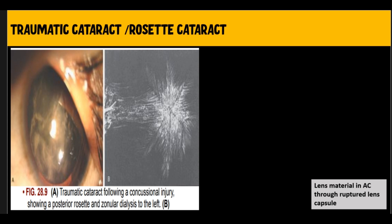Blunt or concussional trauma to the eyeball can lead to development of a characteristic cataract in the shape of a flower — called a rosette cataract, as clearly seen in the second picture. Always look for other signs of trauma, such as zonular dialysis, which can be seen from eight o'clock to ten o'clock in the first picture. Because of the trauma, the zonules attached to the lens break down, producing zonular dialysis. In some cases, lens material can be seen coming out into the anterior chamber through a ruptured lens capsule.